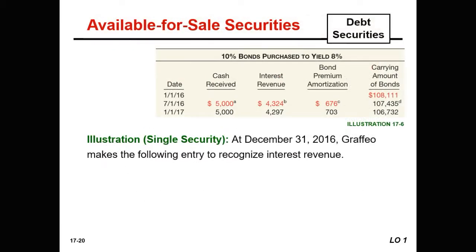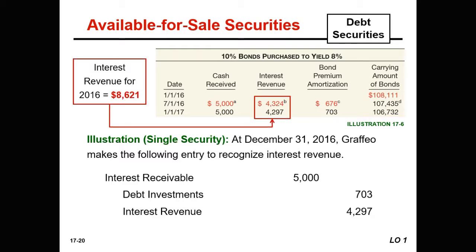On December 31st, 2016, we need to recognize the interest revenue and interest cash in our end-of-year adjustments. We have interest receivable of $5,000, a reduction to debt investment of $703, and interest revenue of $4,290. The total interest revenue for 2016 is $8,621, although we will have received or have as a receivable a total of $10,000 — because we paid a premium for this bond, which carries a 10% interest payment while the current yield is 8%.